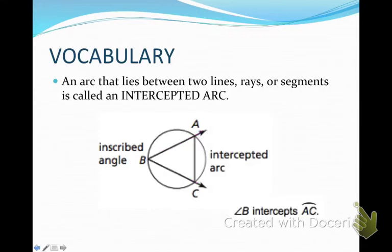An arc that lies between two lines, so in this case arc AC, that lies between two lines, rays, or segments is called an intercepted arc. So in the case of our inscribed angle B, angle B intercepts arc AC.